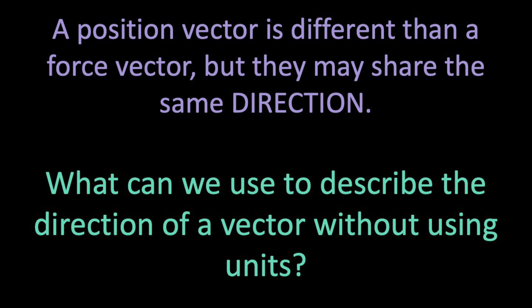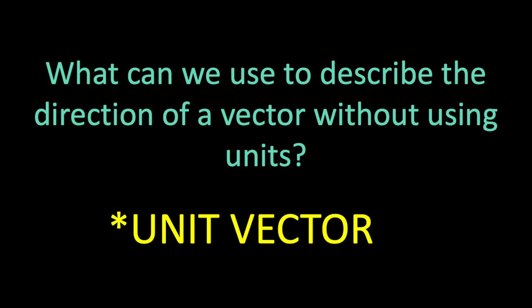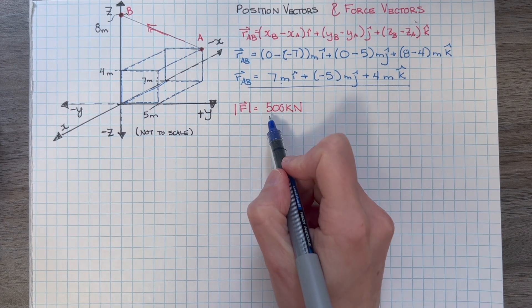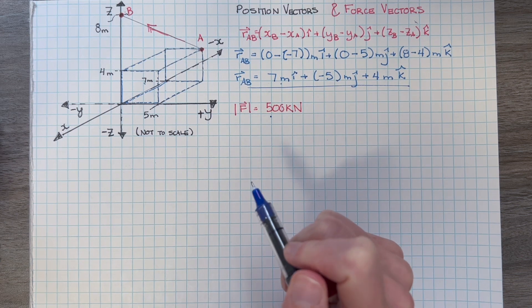To bridge the two types of vectors, can you think of a unitless way that we can describe the direction of vectors within a 3D Cartesian space? 10 points if you guessed unit vectors. Our force and position vectors will have the same unit vector. If we find our unit vector, we can multiply it by our force magnitude, and we end up with our force as a Cartesian vector.